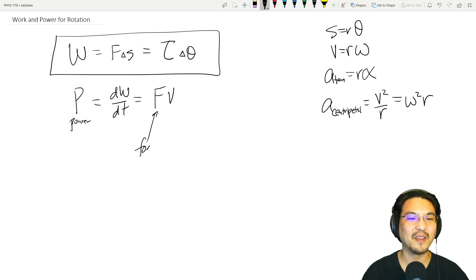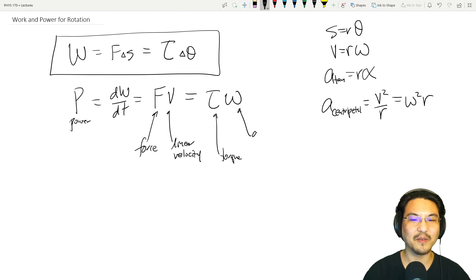And then similarly, if you take the time derivative of this for constant torque, then this turns into dθ/dt, which is angular velocity. Torque and that's angular velocity.